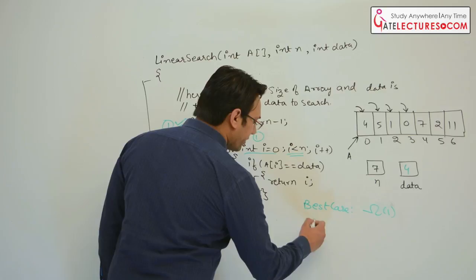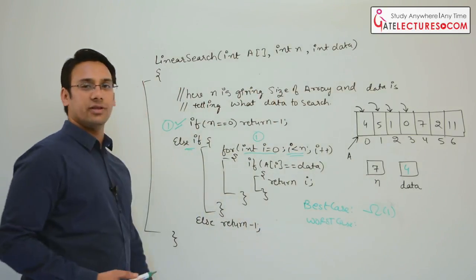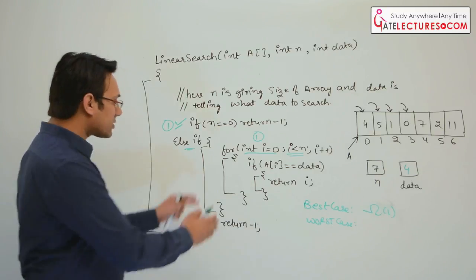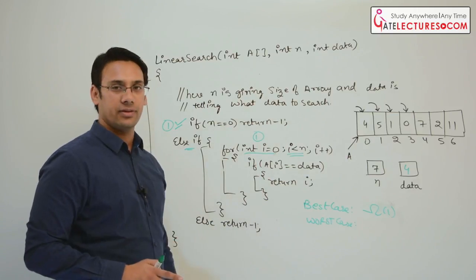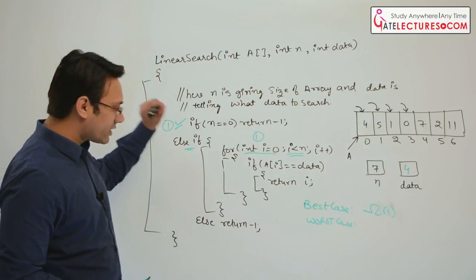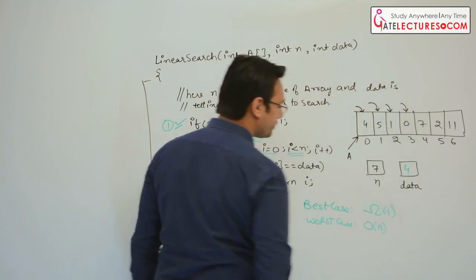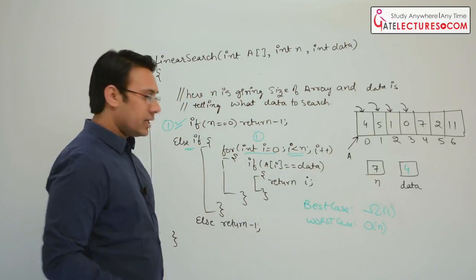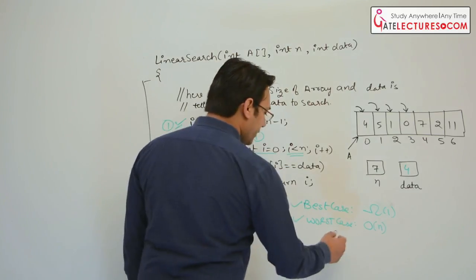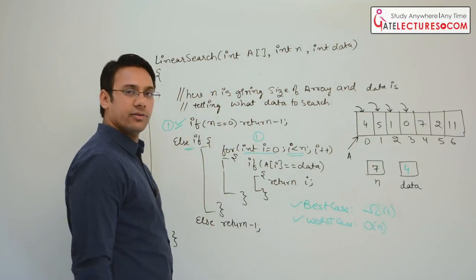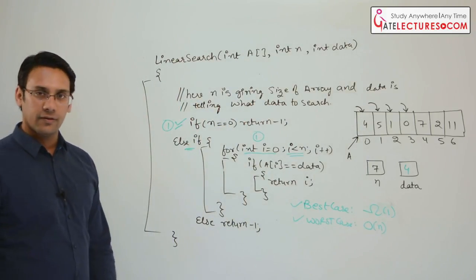Here the best case and the worst case are not the same. Therefore, we cannot give a Theta notation for linear search — Theta notation only applies when the tightest upper bound and the tightest lower bound are equal.